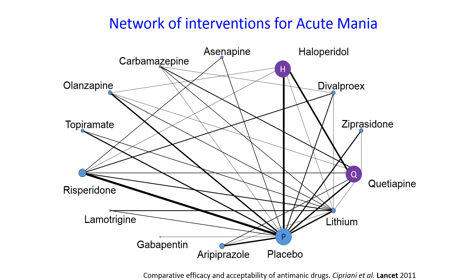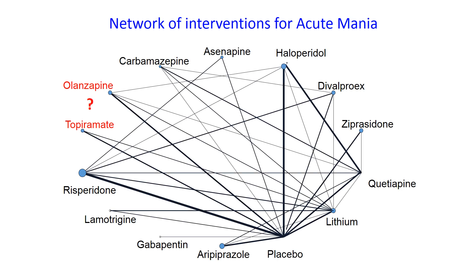A network meta-analysis formalizes this process in a statistical model by combining results from all studies simultaneously. It enables us to obtain relative treatment effects for all pairs of interventions, even for those without direct evidence. It can also improve precision by reducing the width of the confidence intervals compared with those obtained from direct evidence alone. Note that when we estimate treatment effects, randomization is preserved. Nevertheless, indirect comparison and consequently network meta-analysis provide observational evidence because the treatments being compared have not been randomized across the individual trials.